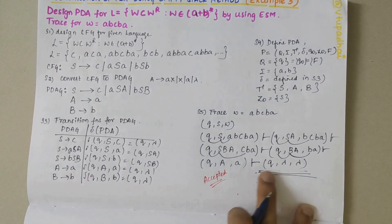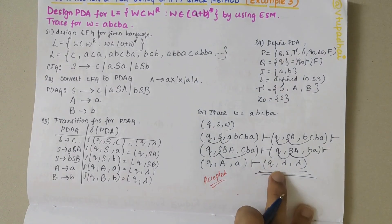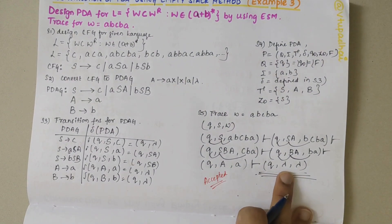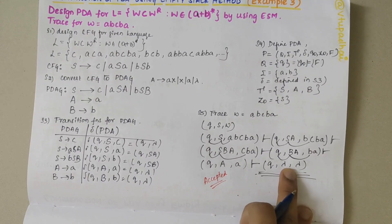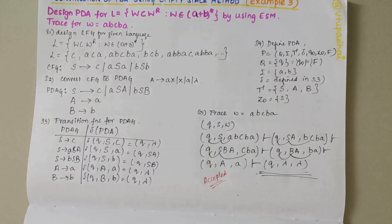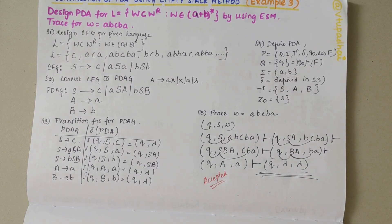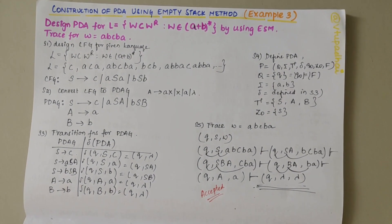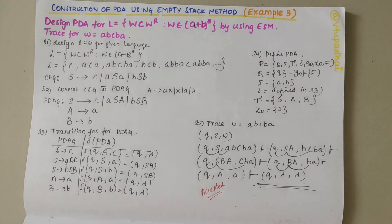In the empty stack method, we must arrive at state Q with an empty string and empty stack. That confirms acceptance. This is how we design a PDA using the empty stack method. If you have any doubts, let me know in the comments and please subscribe to the channel. Thank you.